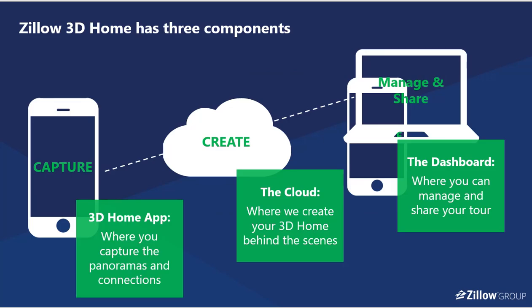From a high level, Zillow 3D Home has three components. The capture application, which you download from the App Store. You create your panels, you create your connections, and then that's uploaded into the cloud where we stitch that together, work our magic, and then present it back to you as a finished tour that you can then manage, share, or publish.